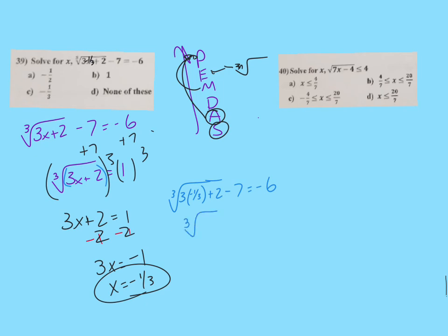Now I have the cube root, 3 times negative 1 third is negative 1 plus 2. That's where I messed up when I was doing it in my head. Minus 7 equals negative 6. So I end up with the cube root of 1 minus 7 equals negative 6, and that's true. So it does work. It is possible that you could plug it in and it does not work, and there is no answer then. There's no real solutions. So it is possible you get a false solution.